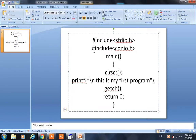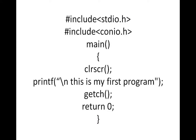First of all, there is a program — hash include stdio.h. This is a header file; it is standard input output dot h header file. Next, hash include conio.h. This is console input output dot h header file. These two header files in each and every program we have to include.